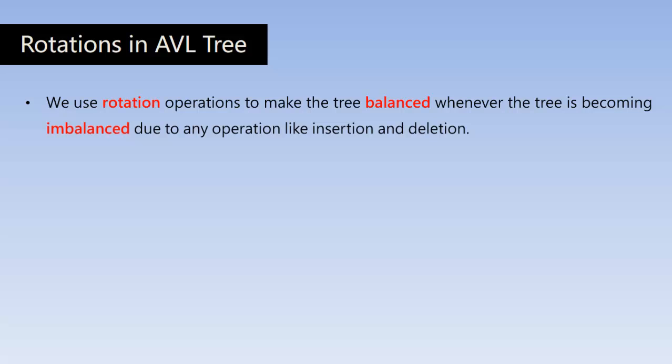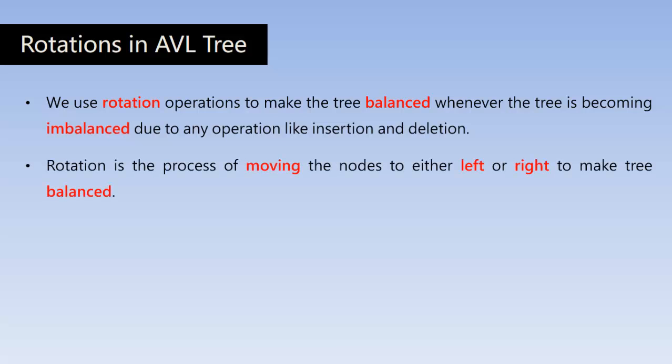In the last class we learned what is a balanced tree and what is an unbalanced tree. When you keep inserting new nodes into the binary search tree, it may become imbalanced. Imbalanced means nodes will have a balance factor other than 0, minus 1, or 1. Rotation is the process of moving nodes either left or right to make the tree balanced.